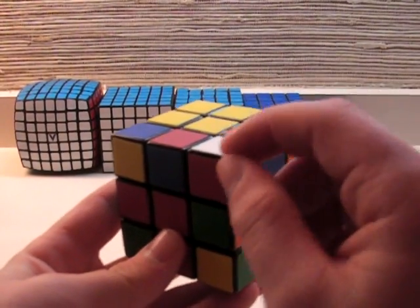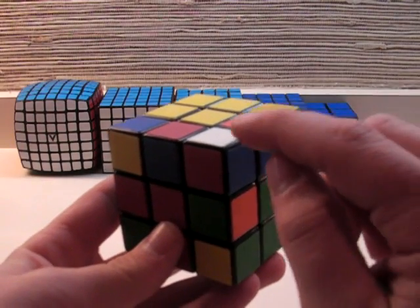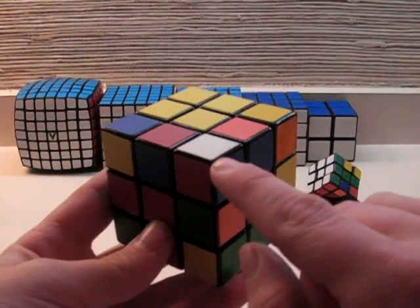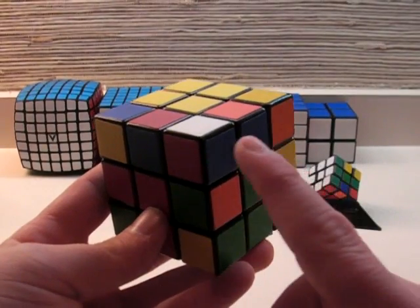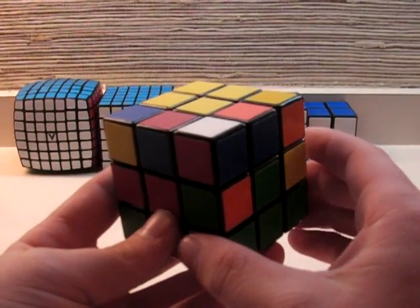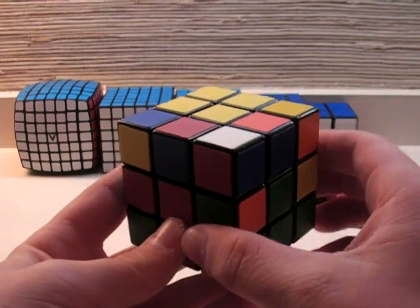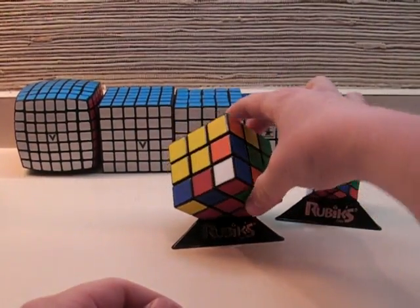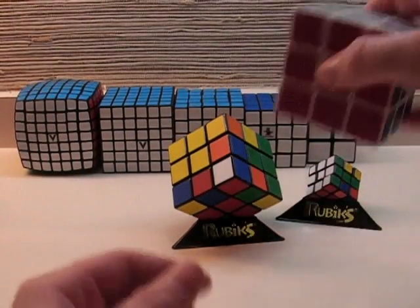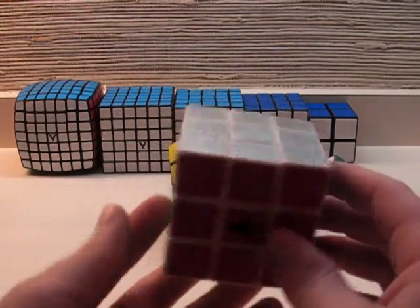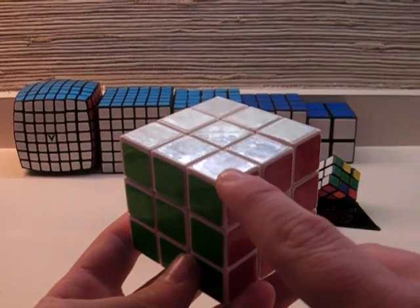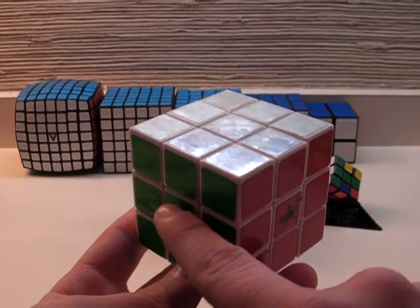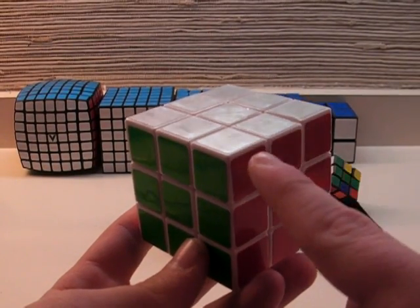So once you find a corner, you position it above where it needs to go. And since this corner has white, red, and blue, you want to put it above the spot where it's going to go. When you have your cube, the corner that you have goes between the centers with its colors. So red, green, and silver in this case.